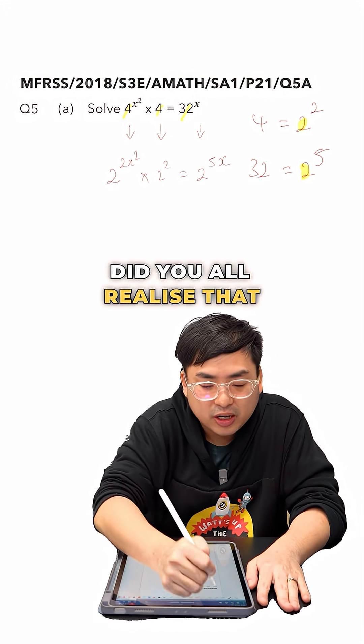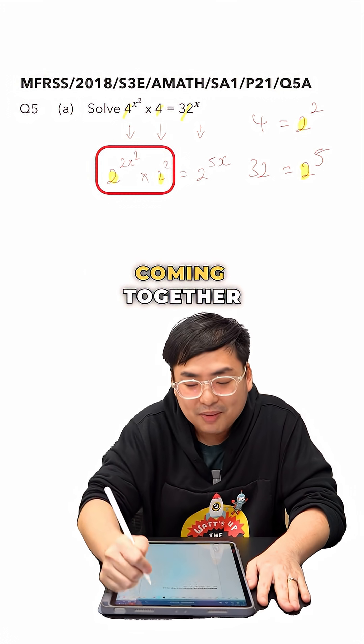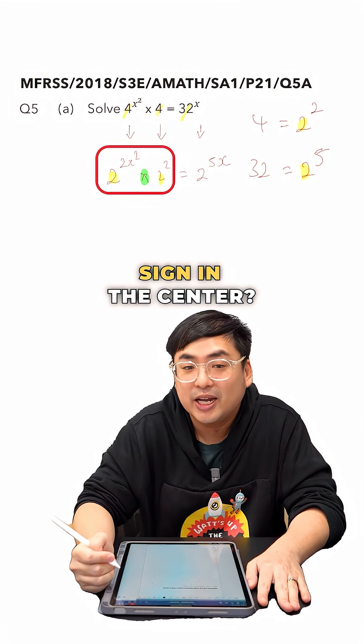Now in this form, did you all realize that on the left hand side, we have two terms with the same base of 2 coming together with a multiplication sign in the center?